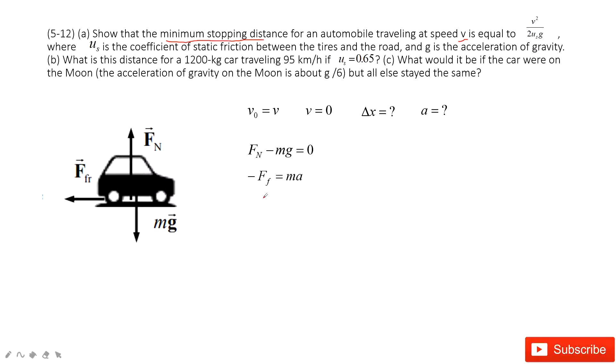In x-component, we have negative friction equals the mass times acceleration. And this friction equals μ_s times the normal force. Therefore, we can get the acceleration equal to negative μ_s g. Do you agree?